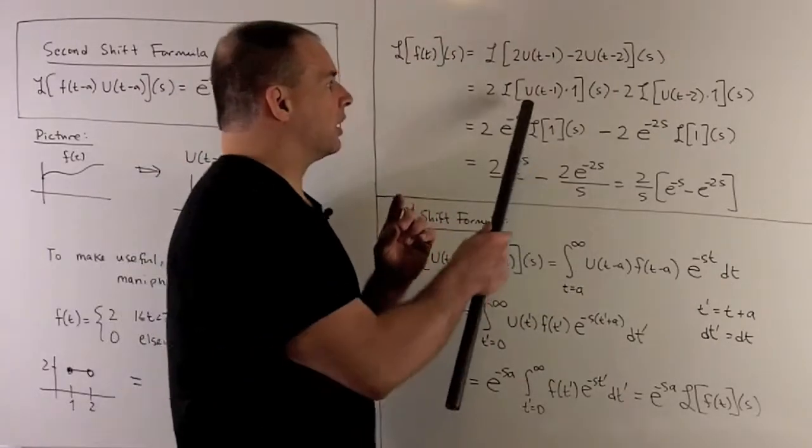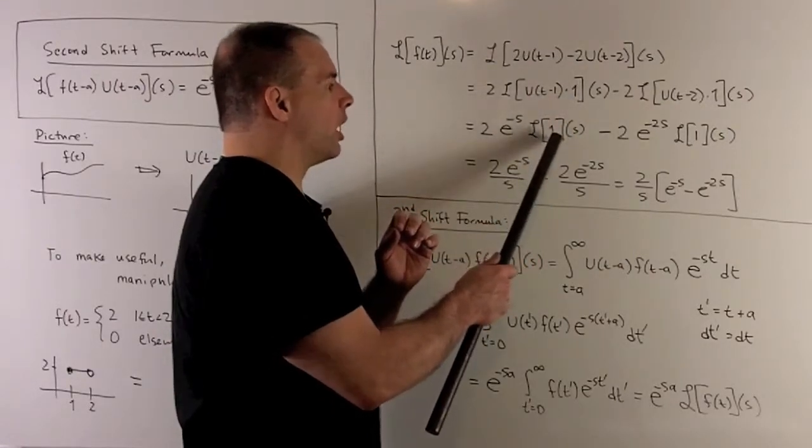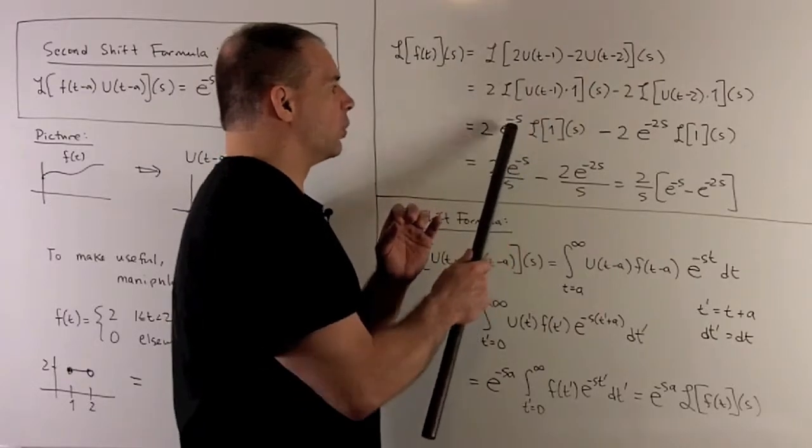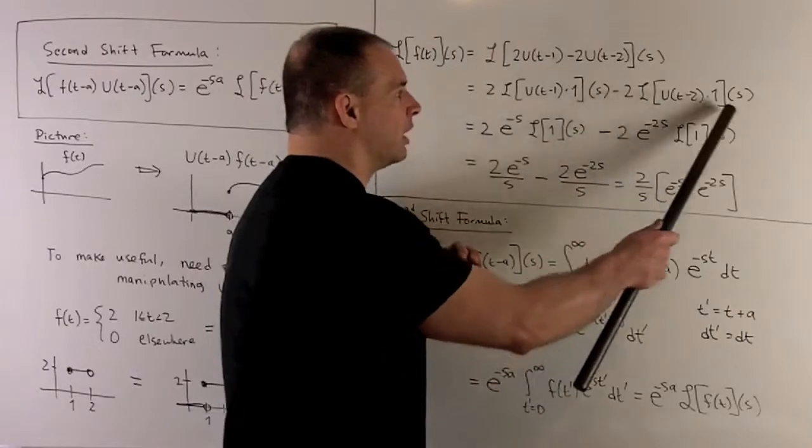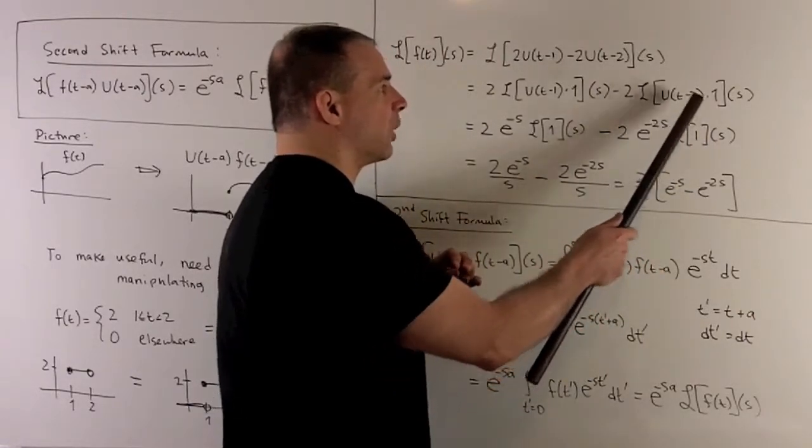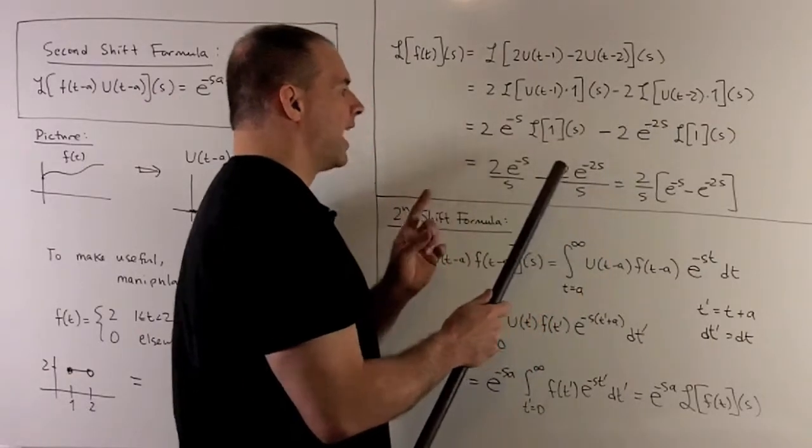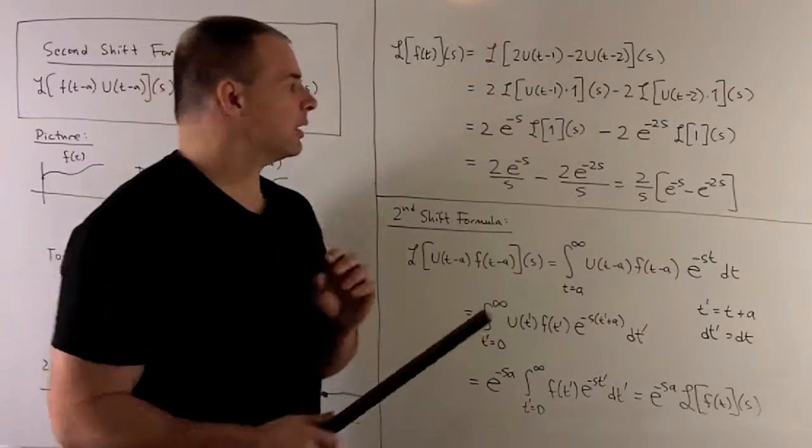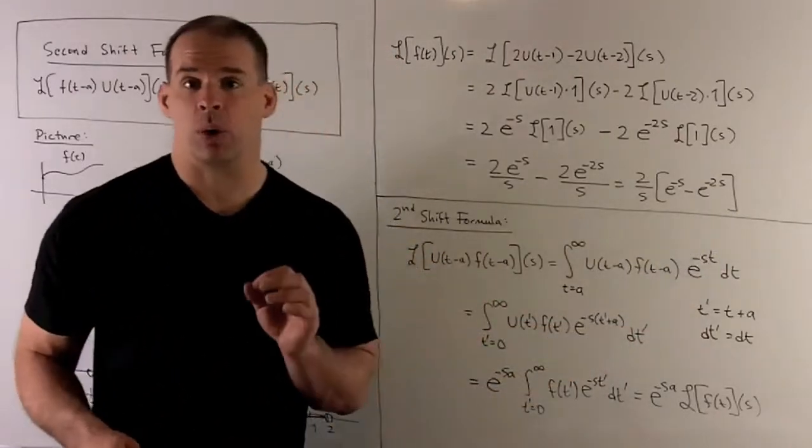So what happens here? Well, we take our original function. So it's going to be Laplace transform of one. We correct by e to the minus a s. Here a is equal to one, so I get e to the minus s. Then same idea over here. Laplace transform of one. Then we have e to the minus a s, where a is equal to two. So we get e to the minus two s. Then Laplace transform of one is going to be equal to one over s. So when I collect things together, you notice this is going to check our work from the first board.